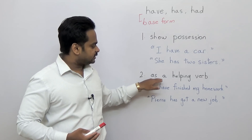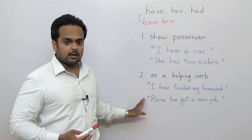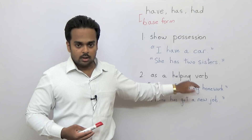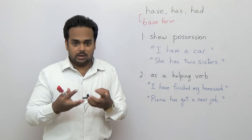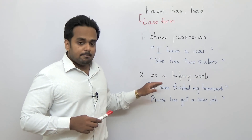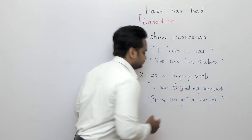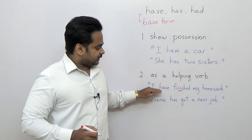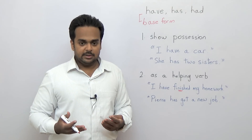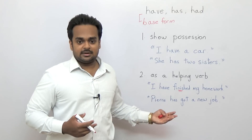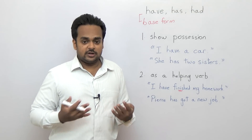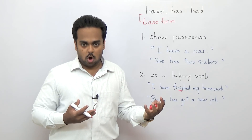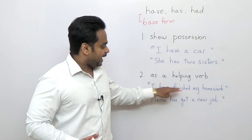Now 'have' can also be used as a helping verb. Here I have two sentences in the present perfect tense. In the sentence 'I have finished my homework,' 'have' is not showing that someone has something — that's not the function. The main verb here is 'finished,' and 'have' is helping this verb. If someone says 'I have finished my homework,' you might guess that they've just finished. Or if a kid tells his mother 'I've just finished my homework — can I go out and play now?' there's a connection between finishing the homework and the present.